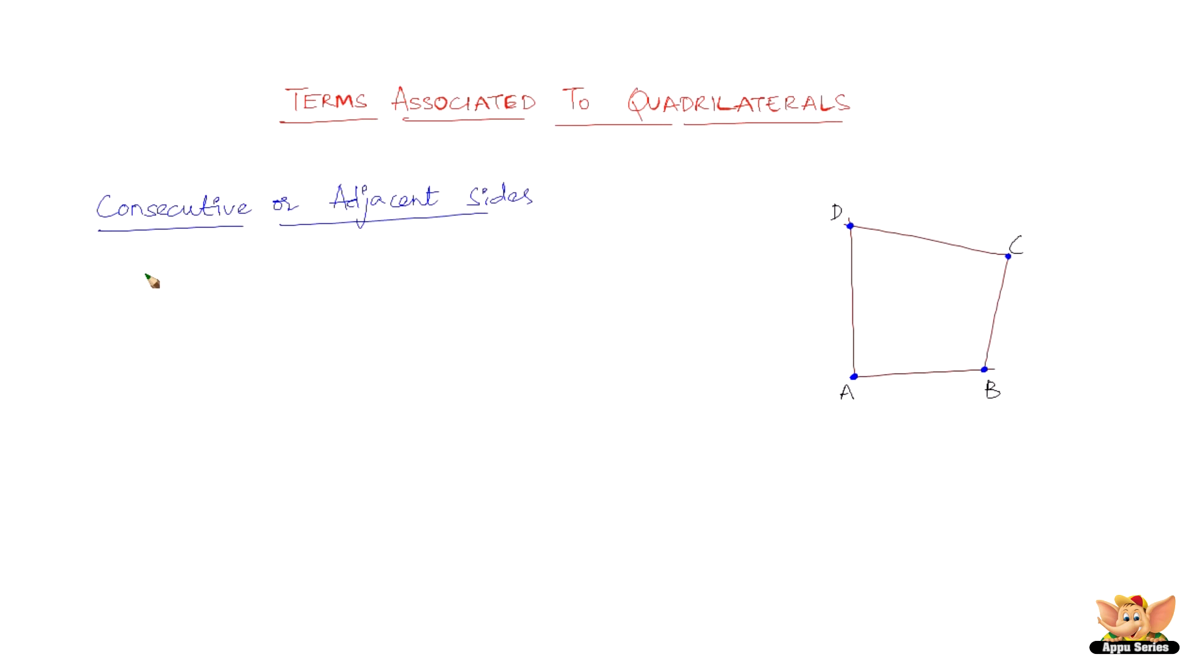So let me summarize and write them down for you. Here, AB and BC, BC and CD, CD and DA, DA and AB. So these are the four pairs of adjacent sides in this given quadrilateral ABCD.